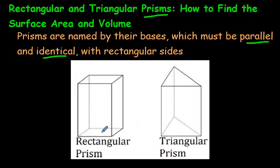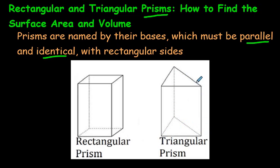So if we have a rectangular prism, the top and the bottom are the same, and then we have rectangles going up the walls. This is a triangular prism because it has a triangular base. It also has a top that is triangular and identical to the base, and we also have rectangles going up the sides.